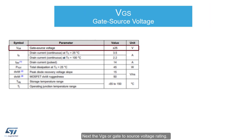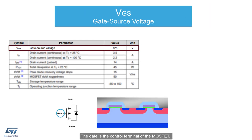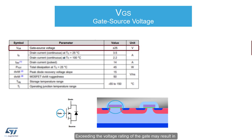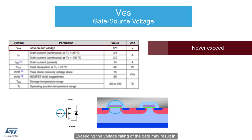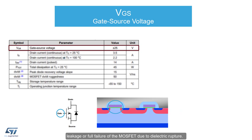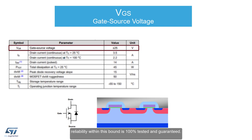Next, the VGS, or Gate-to-Source Voltage Rating. The gate is the control terminal of the MOSFET, insulated from the drain-to-source conduction channel by a gate oxide. Exceeding the voltage rating of the gate may result in degradation of this oxide and eventually increase current leakage or full failure of the MOSFET due to dielectric rupture. While exceeding this value may not always cause failure, reliability within this bound is 100% tested and guaranteed.